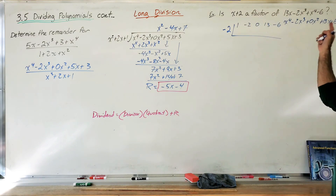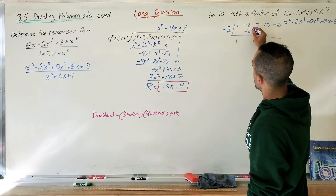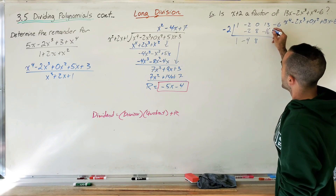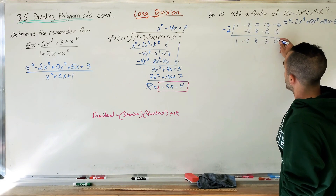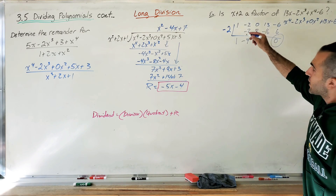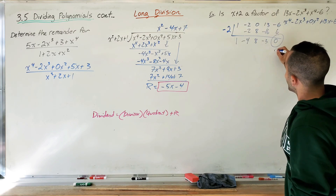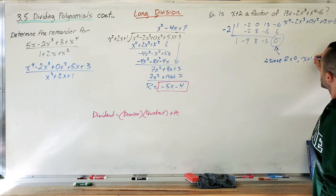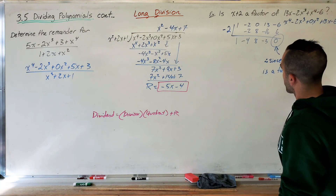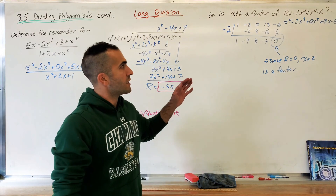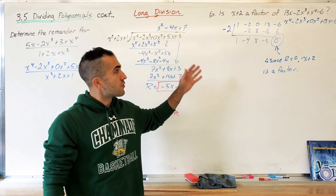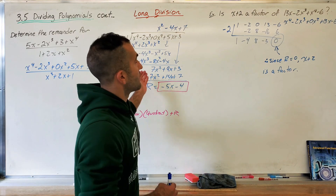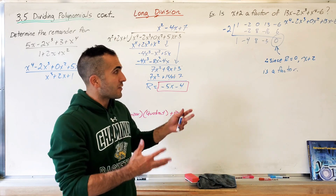For synthetic division I put all the coefficients in the table: 1, negative 2, 0, 13, negative 6. Bring down the 1, multiply by negative 2, add; negative 2 plus negative 2 is negative 4, multiply, add; multiply, add — and the remainder is 0. Since r equals 0, therefore x plus 2 is a factor. Synthetic division is amazing — you can do it quickly, and there's no real reason to use a calculator. That covers long division and synthetic division, which will eventually help us factor and graph these polynomials.